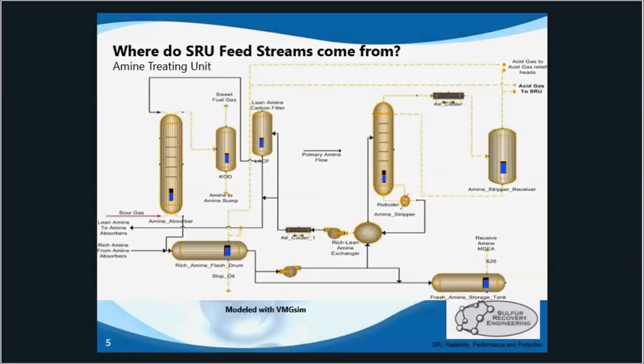All refinery and gas plant process gas streams that contain H2S are routed to an amine unit for removal. Amine units capture H2S in an absorber or contactor, and then release it in a regenerator or stripper in the form of acid gas. This contains H2S, CO2, and hydrocarbon contaminants. We hope that the upstream amine unit can minimize these contaminants before they send it to the SRU.